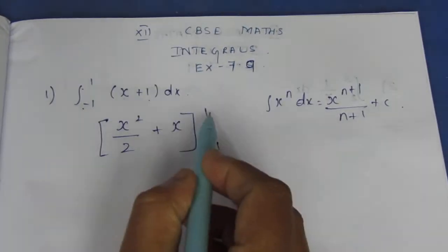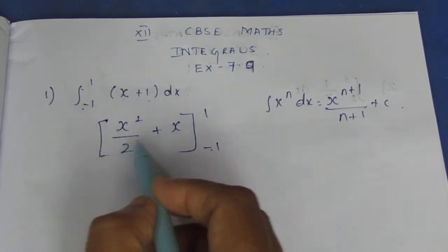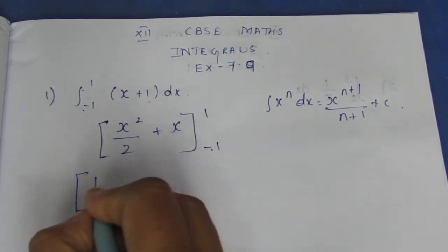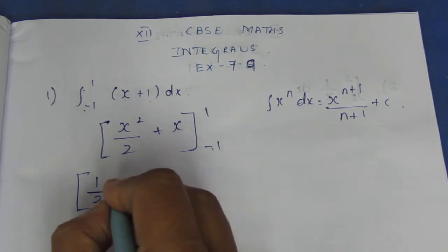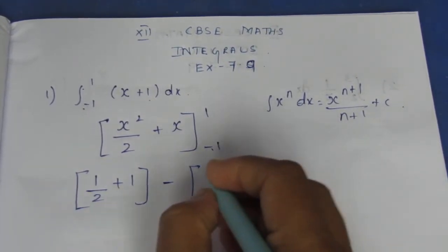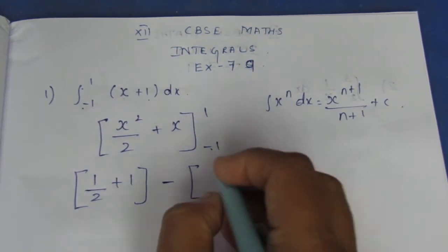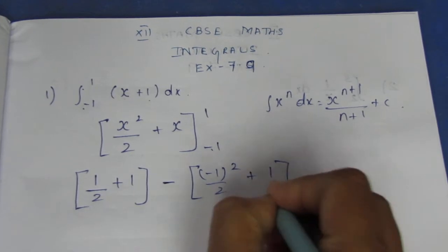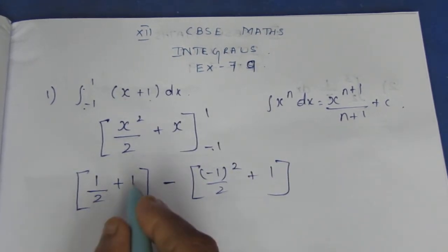Now we need to substitute the value, the upper value minus the lower value. If I substitute the upper value, it becomes 1^2 is 1 by 2 plus 1, minus if I substitute the lower value, negative of the lower value, it becomes minus 1 whole square by 2 plus 1. Here we need to take LCM.